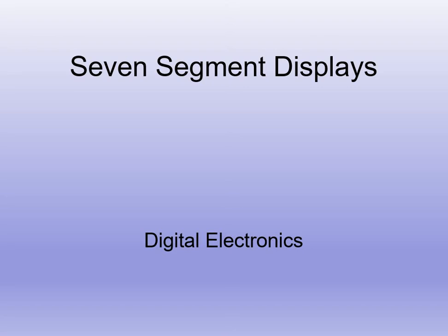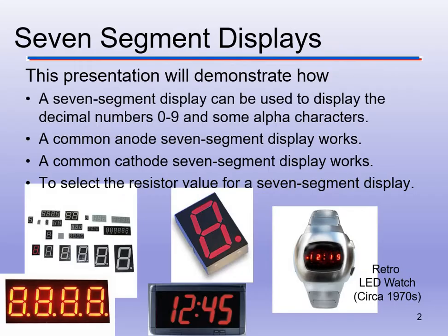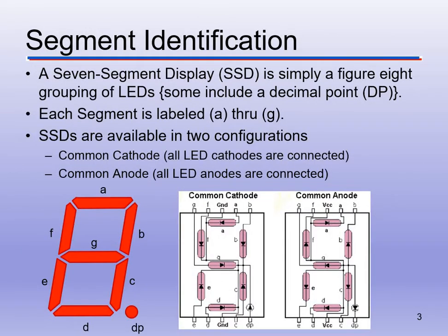Welcome back to Digital Electronics. We're cruising right along here. We are going to go over seven-segment displays today. It's very important that you understand how to wire these up. You're going to be using them on your date of birth project, and you're going to learn how to illuminate them and control what segments come on and off. We'll cover how a seven-segment display works, what a common anode and common cathode is, and how to select a resistor value for a certain luminosity.